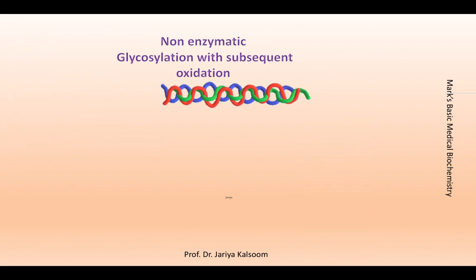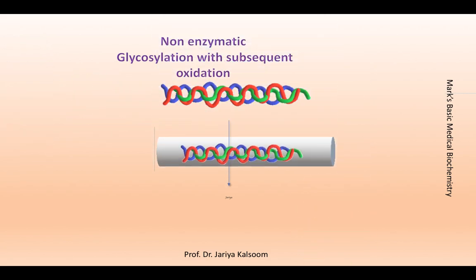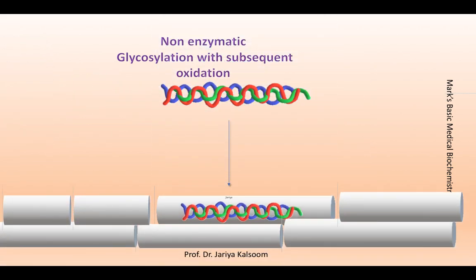Collagen and other glycosylated proteins in tissues are further modified by non-enzymatic oxidation and form additional cross-linkings. The net result is the formation of large protein aggregates referred to as Advanced Glycation End-products, or AGEs. AGE is a meaningful acronym because AGEs accumulate with age, even in individuals with normal blood glucose levels.